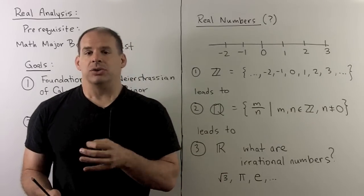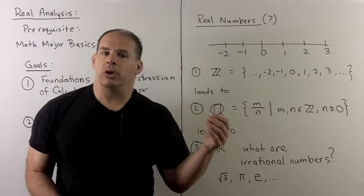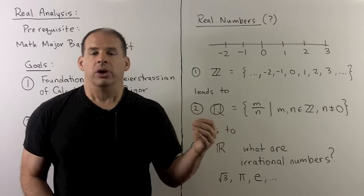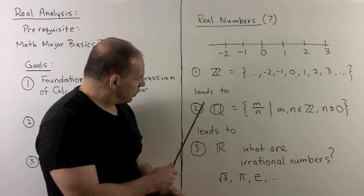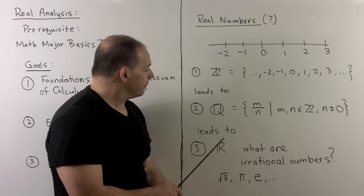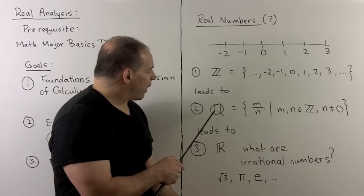So, that leads us to the real number line. Real number line is to throw in all these other numbers that we call irrational numbers. So, one thing we want to focus on is the step going from two to three. So, how do I get the real numbers from the rational numbers?